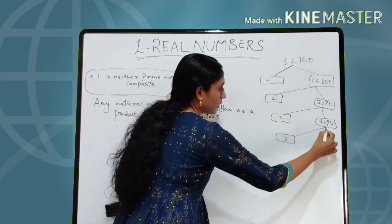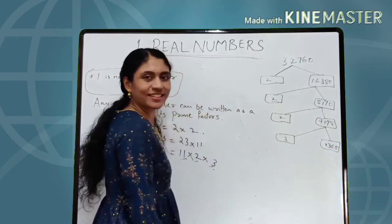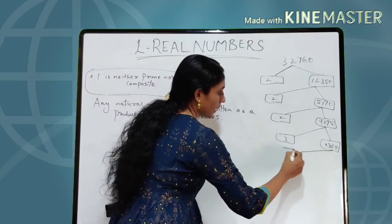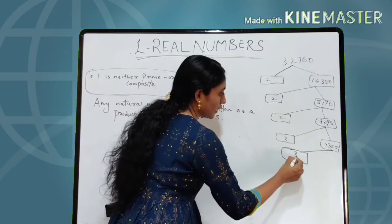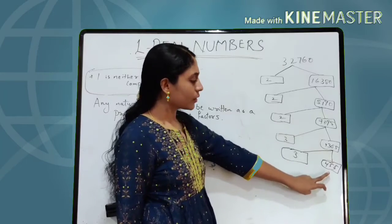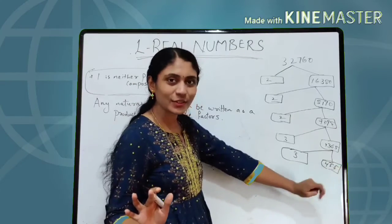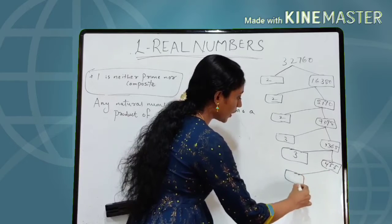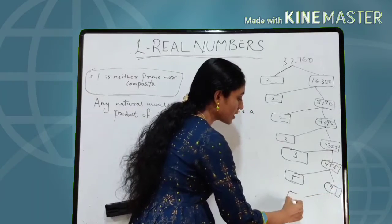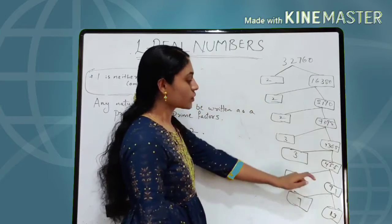1365 is also divisible by 3 because 1+3+6+5 = 15, which is a multiple of 3. Dividing 1365 by 3 gives 455. 455 is not divisible by 3, but it ends in 5, so it is divisible by 5. Dividing 455 by 5 gives 91. And 91 is divisible by 7 and 13, since 13×7 = 91.